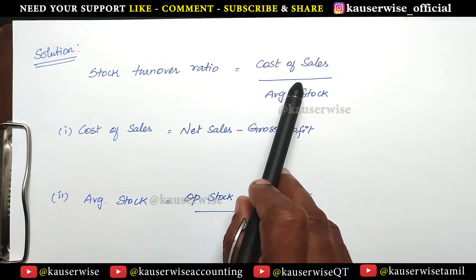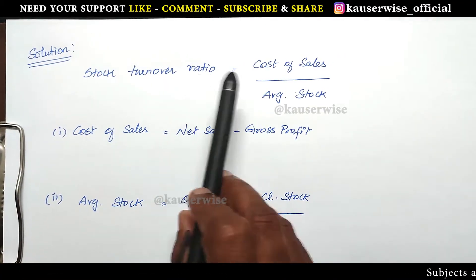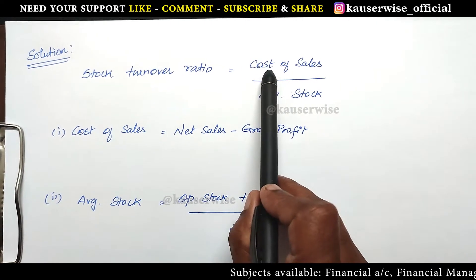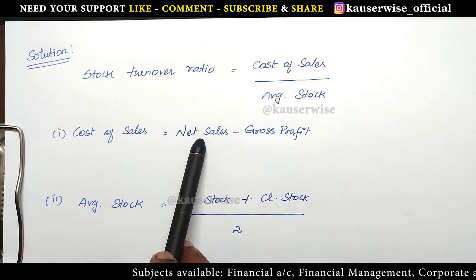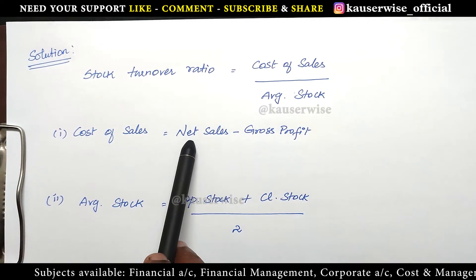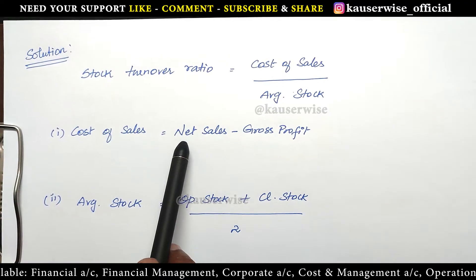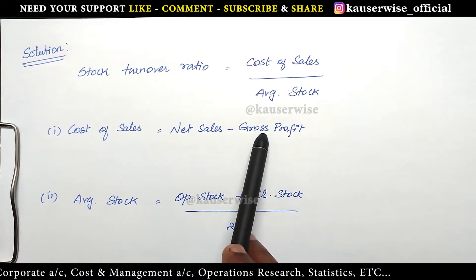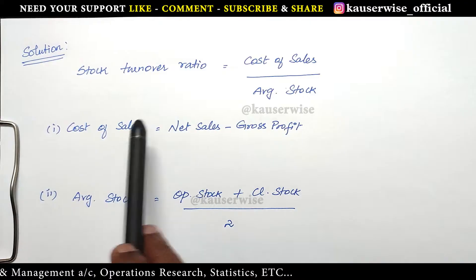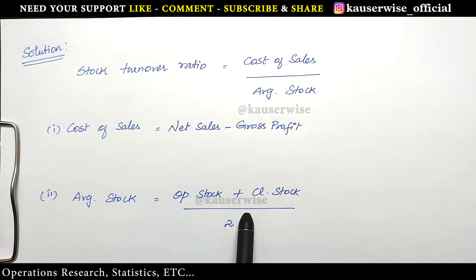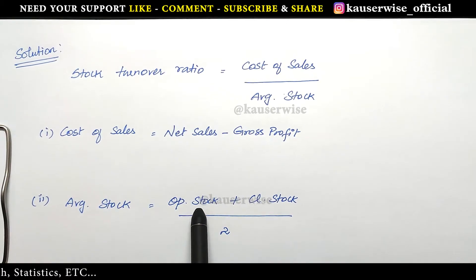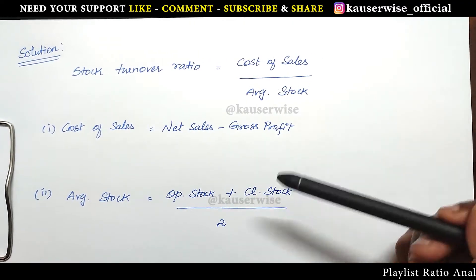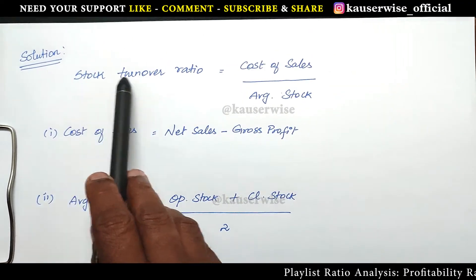This is the formula to find out stock turnover ratio. The formula is cost of sales divided by average stock. What is the formula for cost of sales? Net sales minus gross profit. Net sales means in case of any sales return, just subtract returns from sales in order to find out the net sales. And after finding net sales minus gross profit, you'll be getting cost of sales. The next one is average stock — the formula is opening stock plus closing stock divided by 2.